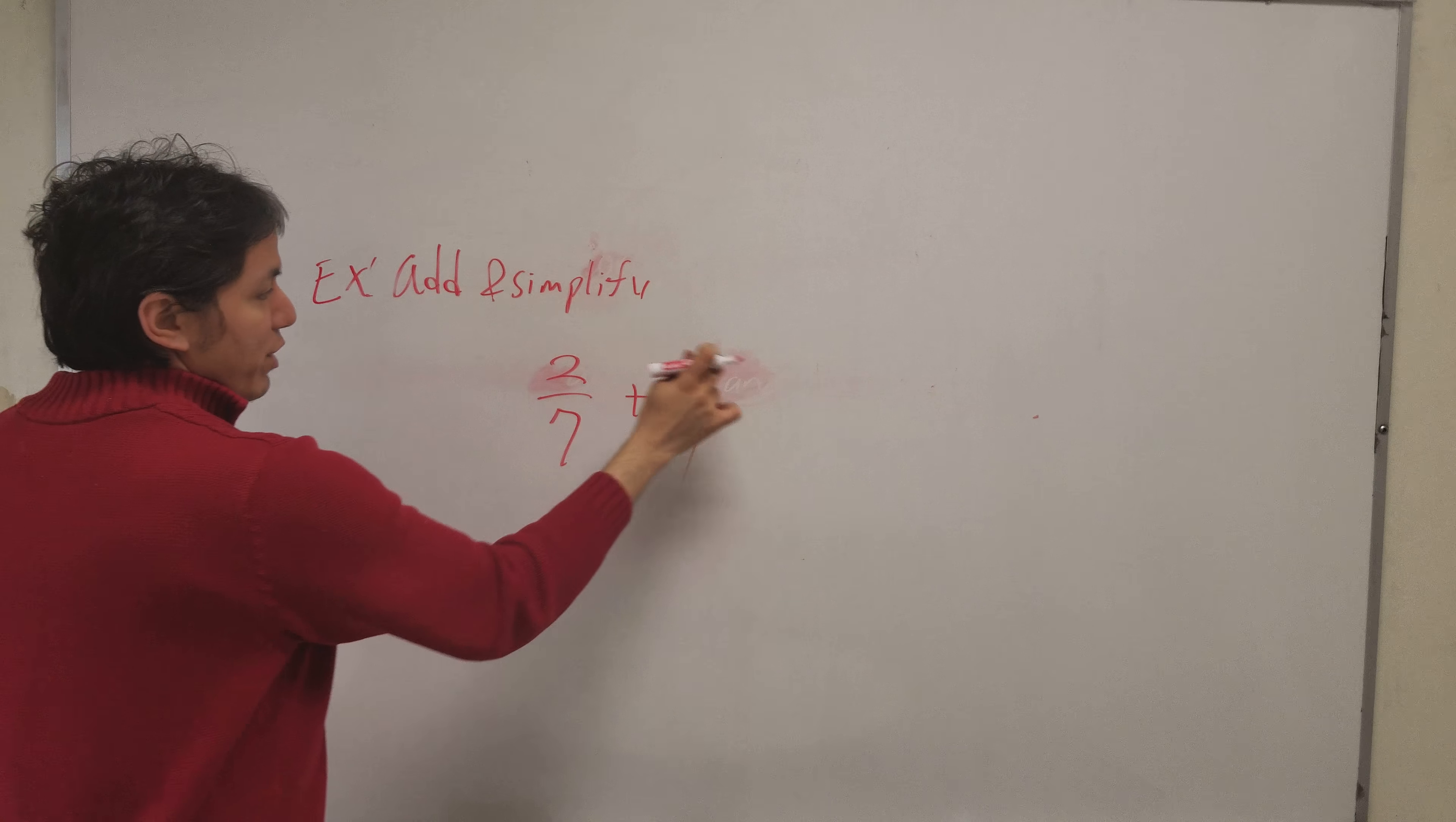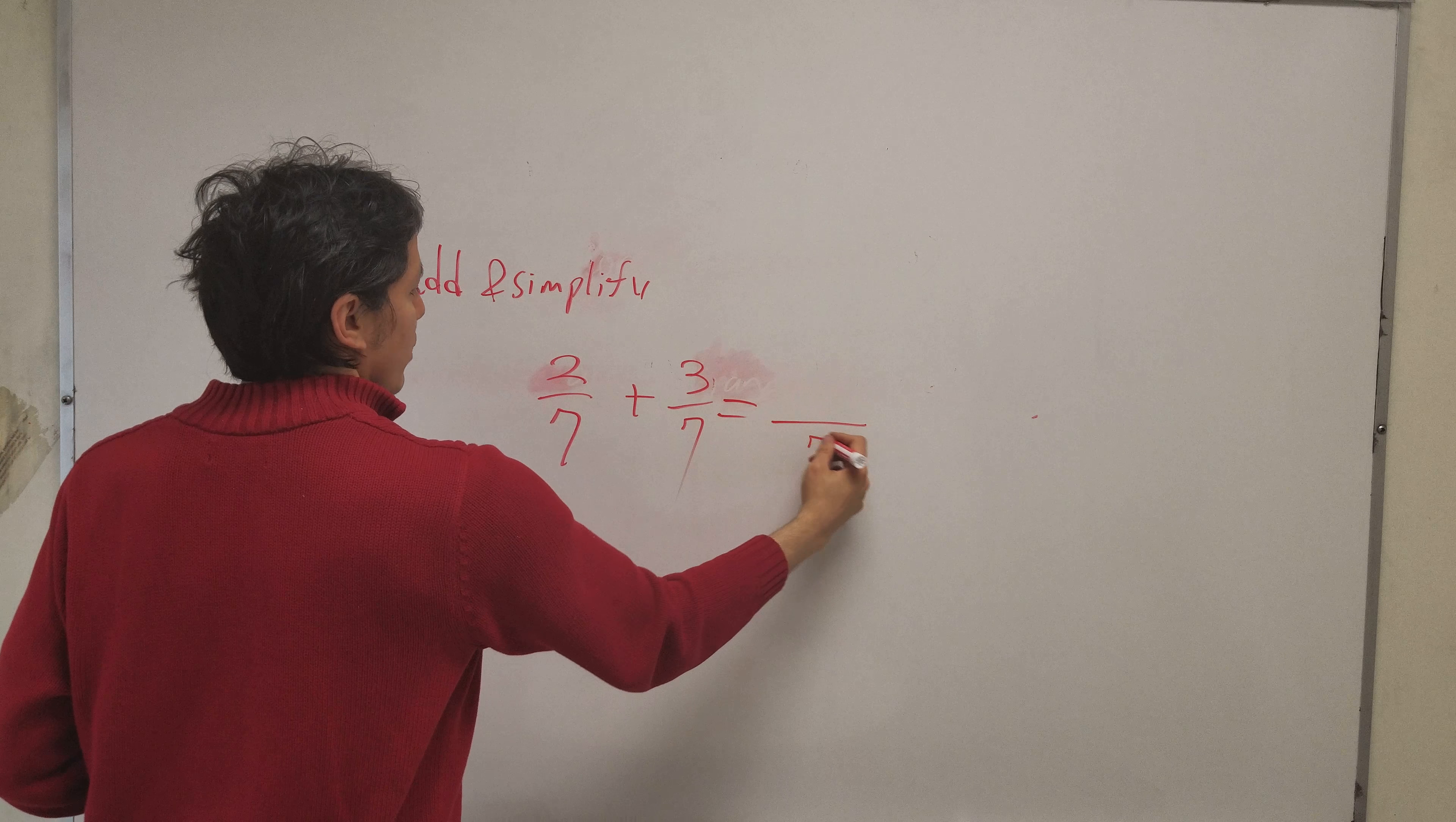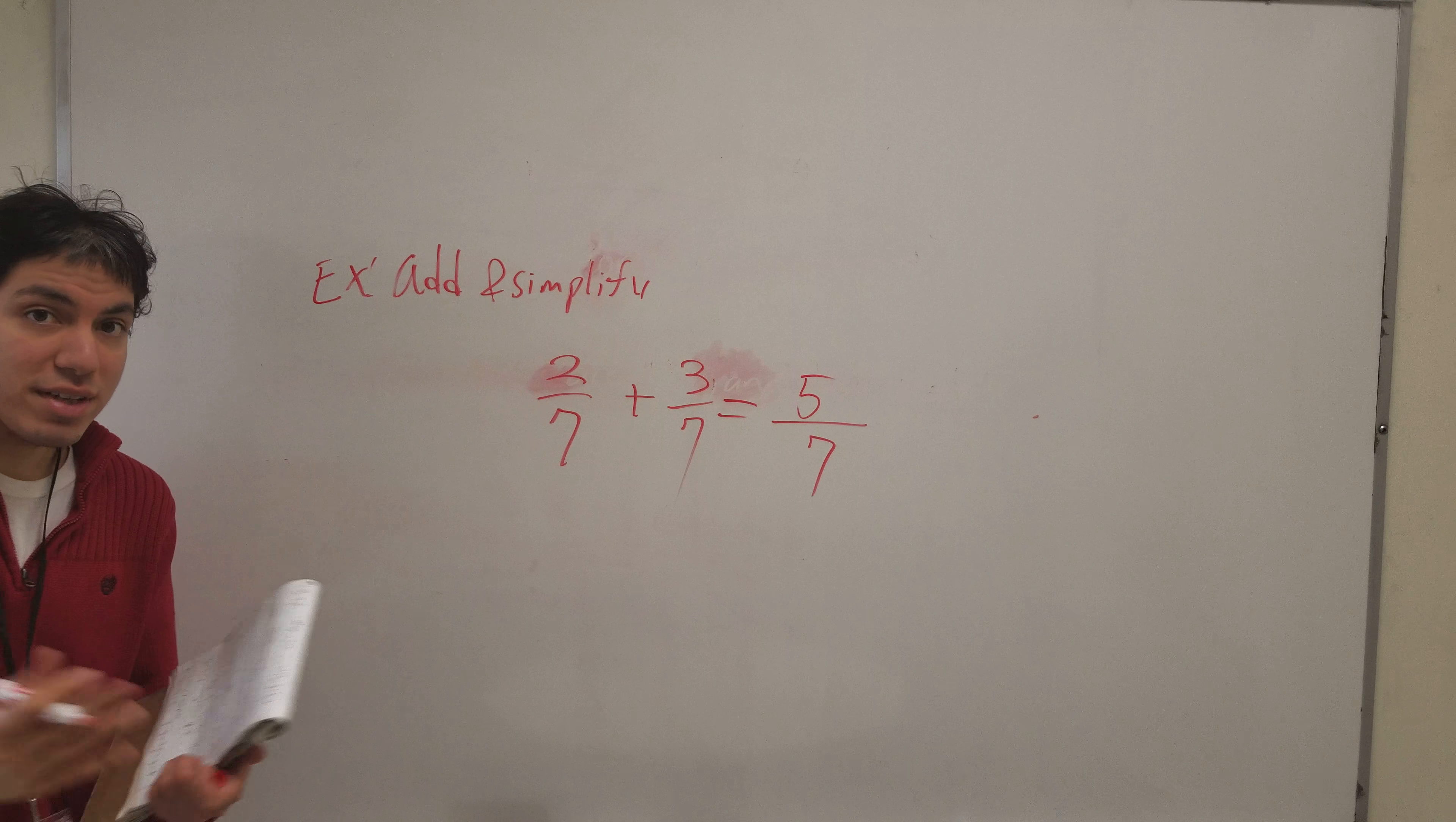As you see the numerators are different, but the denominators are the same. You keep the denominator and you add numerators and I'm left with five over seven as my answer.